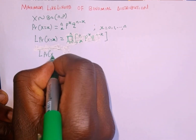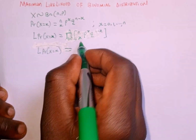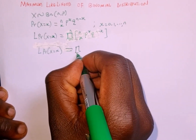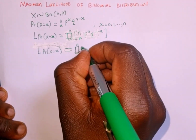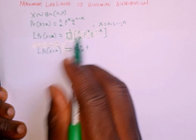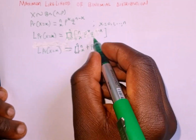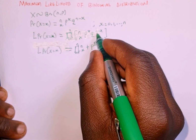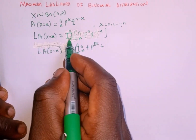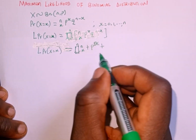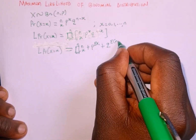So we can write the likelihood of P(X = x) by separating the terms. Taking the likelihood of n-combination-x — the product from i = 1 to n — then p raised to the power of the summation of x_i, plus q raised to the power of the summation of n minus x. When the product operates on a variable it gives us a summation, but when it operates on a constant it gives us n.